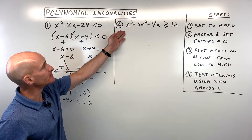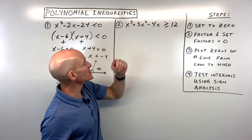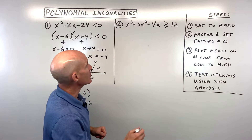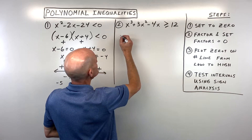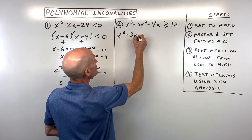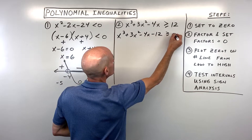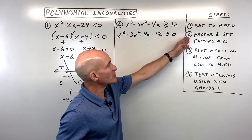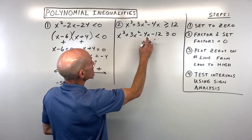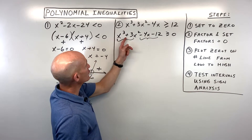For example 2, the first step is getting everything on one side. Subtract 12 from both sides, giving us x cubed plus 3x squared minus 4x minus 12 is greater than or equal to 0. For step two, we factor. With four terms, use factoring by grouping: group the first two and factor out x squared, then group the last two and factor out negative 4.